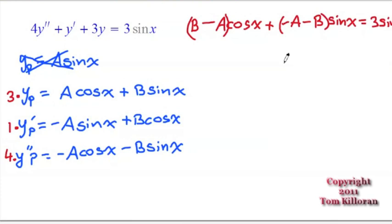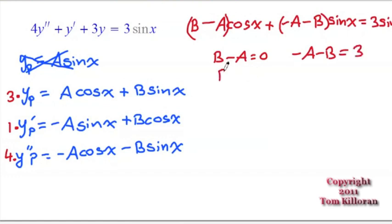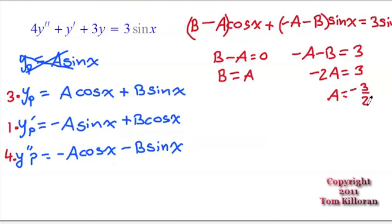There's no cosine on the other side, so b minus a has to equal 0, and negative a minus b has to equal 3. This tells us that b equals a. If b equals a, substituting gives negative a minus a, which is negative 2a, equals 3, and therefore a equals negative 3/2. So b is also equal to negative 3/2. A particular solution for this trigonometric setup is negative 3/2 cosine of x minus 3/2 sine of x, and that would be the particular solution.